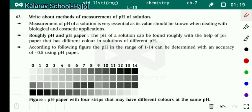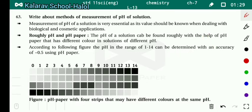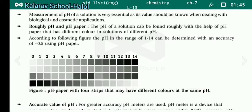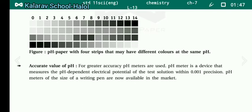Roughly, the pH of a solution can be found with the help of pH paper, which shows a different color in solutions of different pH. According to the figure, pH in the range of 0 to 14 can be determined with an accuracy of approximately 0.5 using pH paper.